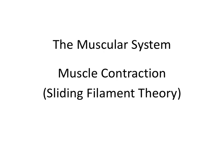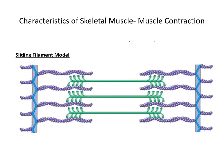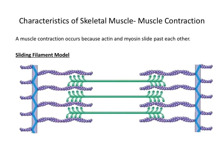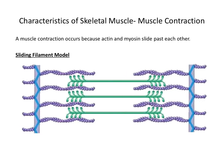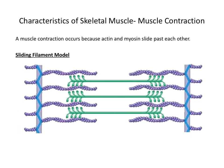In this lecture, we're going to discuss the process of a muscle contraction. We will begin with the initiation of the muscle contraction at the neuromuscular junction and end with the interaction between the actin and myosin myofilaments. A muscle contraction occurs because actin and myosin slide past each other. We call this the sliding filament model.